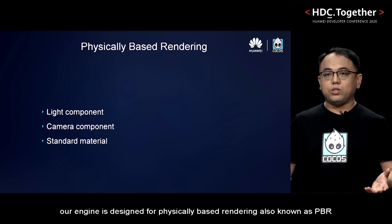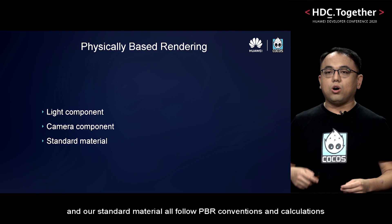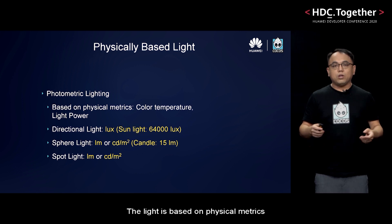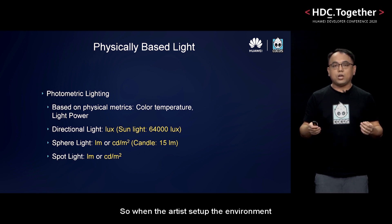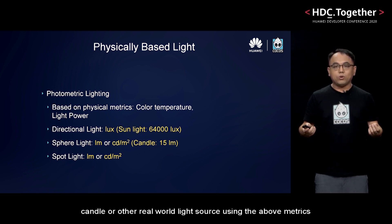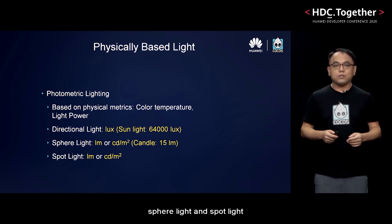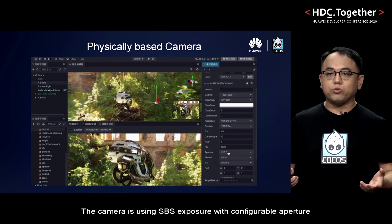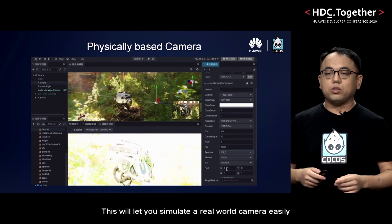Secondly, our engine is designed for physically-based rendering, aka PBR. The design of the light component, camera component, and our standard material all follow PBR conventions and calculations. The light is based on physical metrics: color temperature and light power. So when artists set up the environment, they can simulate sunlight, candle, or other real-world light sources. We currently support directional light, sphere light, and spotlight. The camera uses SBS exposure with configurable aperture, ISO, and shutter speed. This lets you simulate a real-world camera easily.